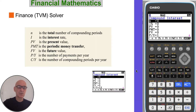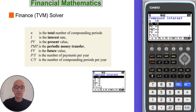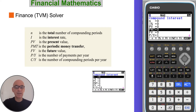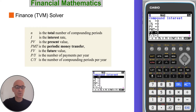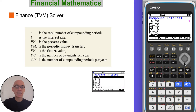In this application, N is the total number of compounding periods, I is the interest rate, PV is the present value, PMT is the periodic money transfer, FV is the future value, P/Y are the payments per year, and C/Y are the compounding periods per year.